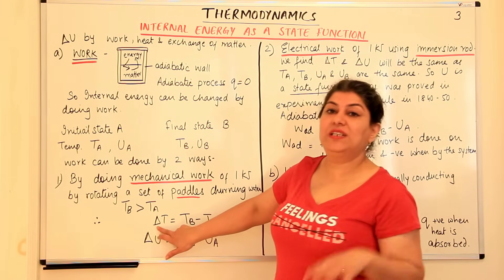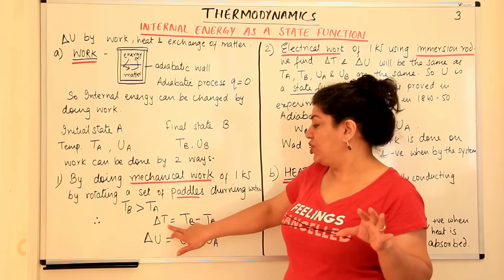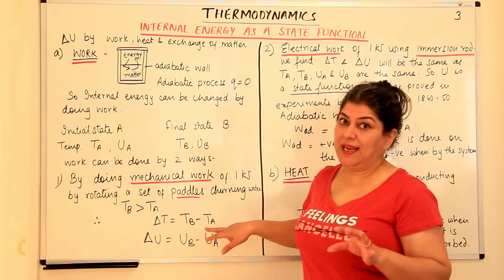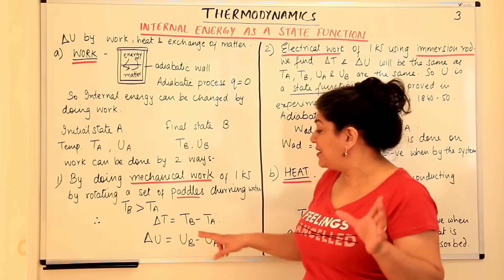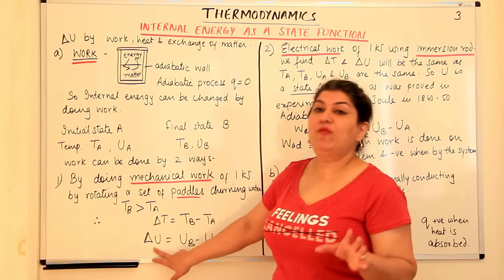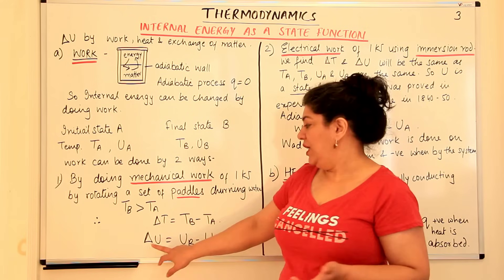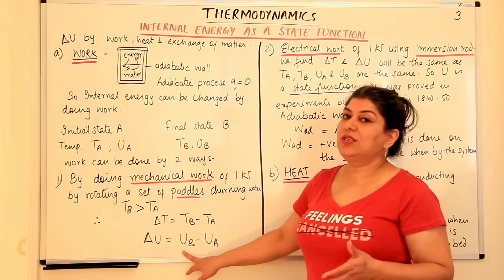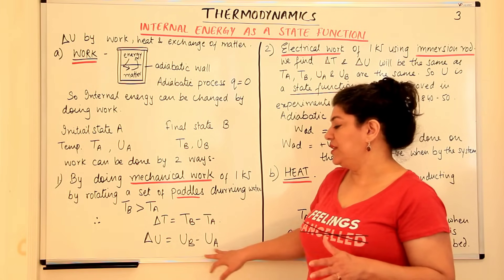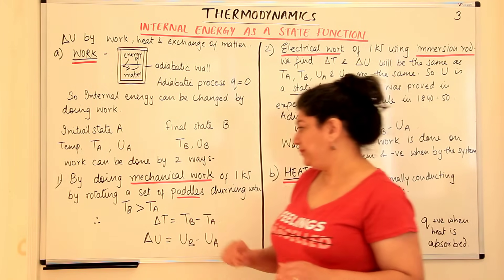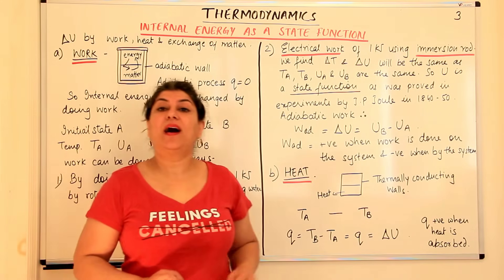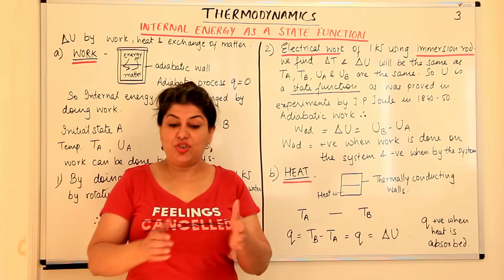So the change in temperature would be delta T equals T_B minus T_A, and the change in internal energy delta U would be the final internal energy U_B minus the initial internal energy U_A.